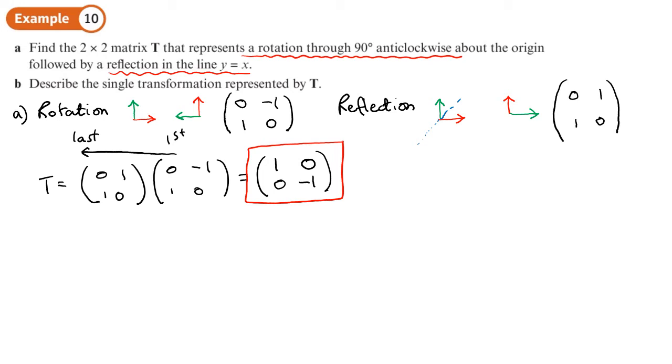Now, in part B, we want to write down what transformation, single transformation, is represented by T. So what we do is we look at the points, 1, 0, 0, 1, and see where they go. So the first column is 1, 0, so that ends up there. Now, the second column is 0, negative 1, so that ends up down there.